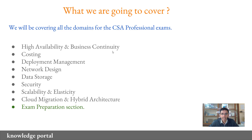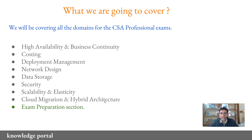The first domain is High Availability and Business Continuity, where we discuss disaster recovery techniques. Then you have Costing. Then Deployment Management, which covers Elastic Beanstalk, OpsWorks, and a basics introduction to Docker and Docker containerization. Then Network Design, covering VPC peering, Direct Connect, VPNs, and similar topics. You also have Data Storage and Security — a section I really like — where we implement a single sign-on solution, and cover delegations, cross-account roles, and more. Then Scalability and Elasticity, covering SQS, Kinesis, DynamoDB, as well as Cloud Migration and Hybrid Architecture.